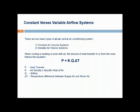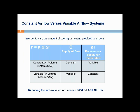VAV systems cool a building using only air and are known as an all-air system. There are two basic types of all-air system: the constant air volume system and the variable air volume system. Both cool the air by delivering it to the room at a lower temperature than the room temperature. The amount of cooling provided can be determined using the formula: heat transfer equals air density times specific heat of air times airflow times delta T — the difference between room and supply air temperature. These two systems vary the amount of cooling in two different ways.